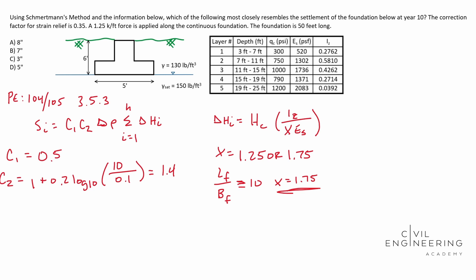So now we have C1, we have C2. Now we need to solve for Delta P. Delta P is going to be our 1.25 kips per foot. That's given to us in the problem right here. That's our force along our foundation over the width of our foundation. So basically we need to figure out how is that force distributed? Well, it's distributed based off of the length. You can imagine that we have a force right here. It's being distributed along right there. So with that said, this guy actually ends up being 0.25 kips per foot.